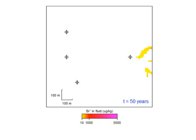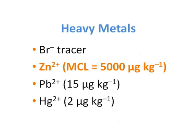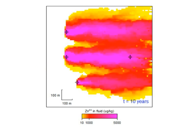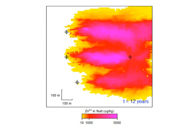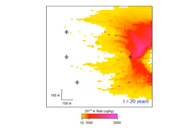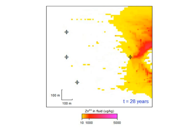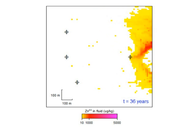Next, we'll look at zinc, which sorbs very weakly to the iron minerals in the aquifer. Since it is retarded only very slightly, its mobility is similar to that of bromide. After 40 years of pumping, most of the zinc-contaminated water has successfully been removed from the aquifer.